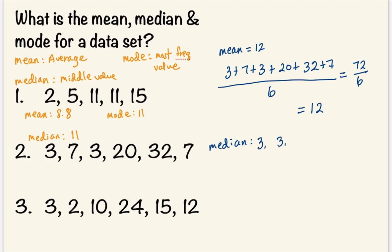We have 3, 3, 7, 7, 20, and 32. Now we need to find the middle number. We have 3 and 3. And so we're left with two numbers in the middle.